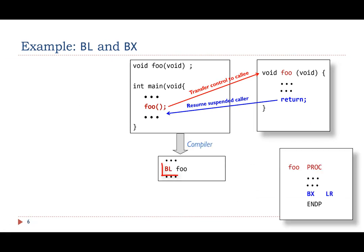In assembly, the instruction BL foo is used to transfer the control to the callee, and the BX LR instruction is used to return the control to the caller.